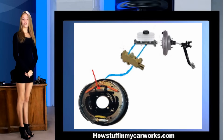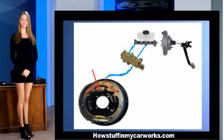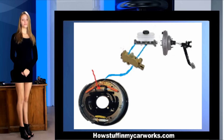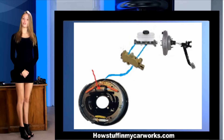On brake drums, the hydraulic pressure pushes the two pistons built in the wheel cylinder against the brake shoes, which causes the brake shoes to rub against the brake drums. This friction also makes the wheels turn slower to stop the car.